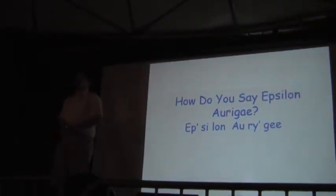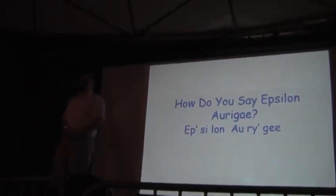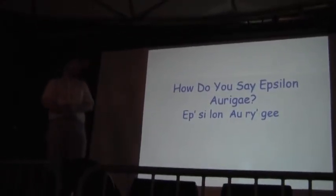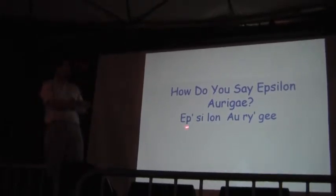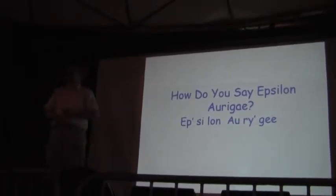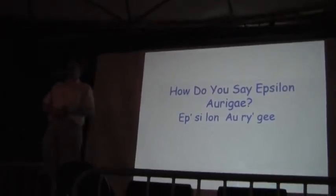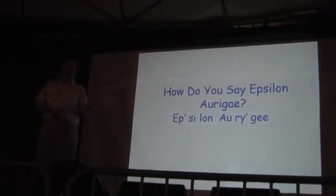That is, in fact, considered the correct pronunciation, Aurigae. I know it sounds very similar to something else. Epsilon, of course, is the Greek letter, so this is the fifth star, the fifth brightest star in the constellation Auriga, the charioteer.